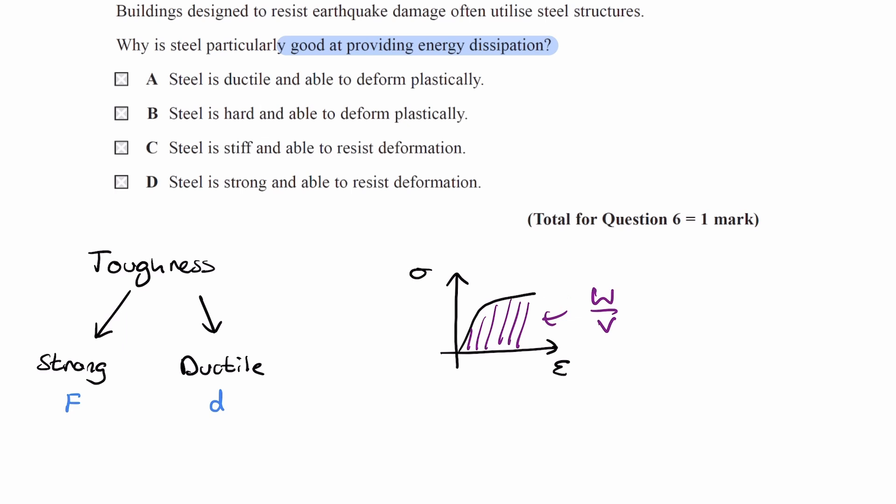Let's look at the options. Option A, steel is ductile and able to deform plastically. Yes, that makes sense.